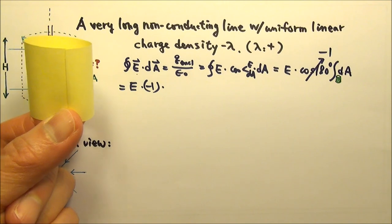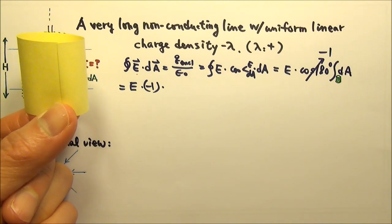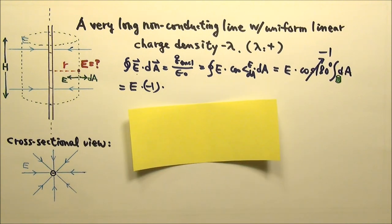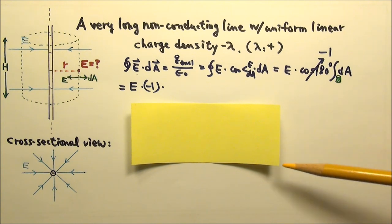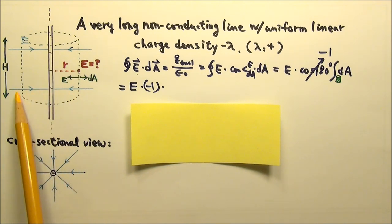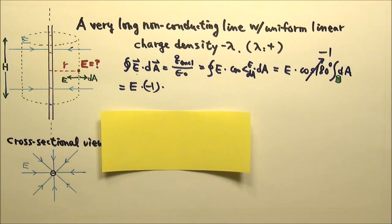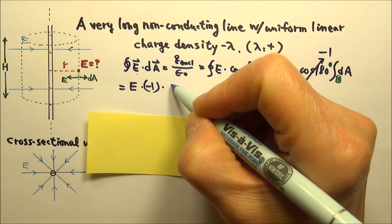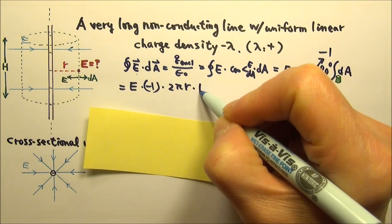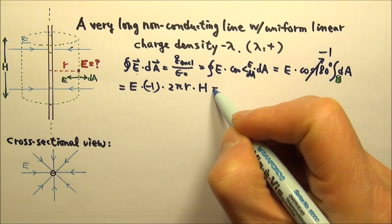To find the area of the curved part, we can cut it open like this. So it is a rectangle with height h and a base equal to the circumference of this circle, 2πr. So the area of the curved part is 2πr times h.